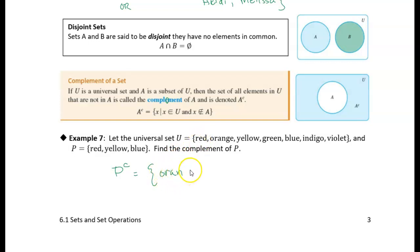Orange, so orange is in the universal set but not part of P, so we'll list that one. Yellow is in P, green is not, so let's write green.